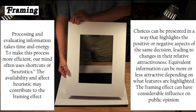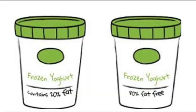The framing effect has probably influenced decisions you've made on a day-to-day basis. For example, think about going to the supermarket and looking at yogurt packaging. If you've got two products that are pretty much exactly the same — one says it contains 20% fat, while the other says it's 80% fat-free — which one are you going to pick? The likelihood is you'll pick the 80% fat-free one because it seems more attractive, since 80% is a large number suggesting how much is fat-free. But in reality, they're the exact same product.